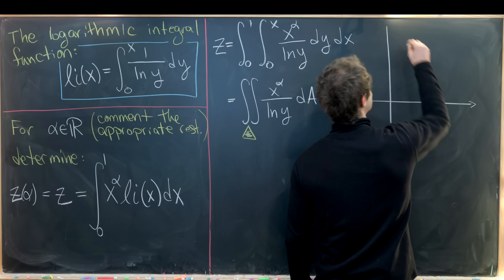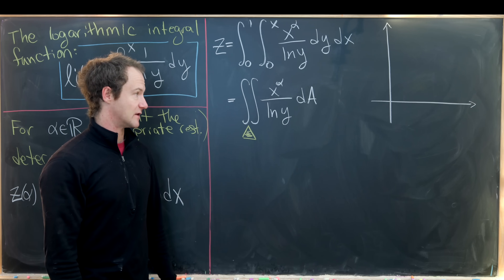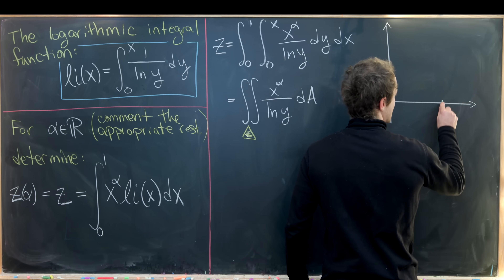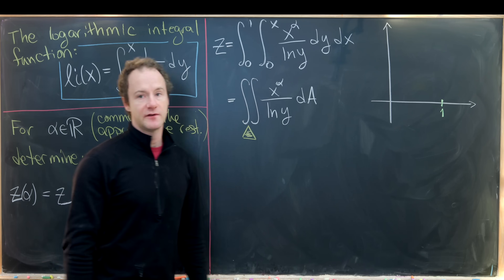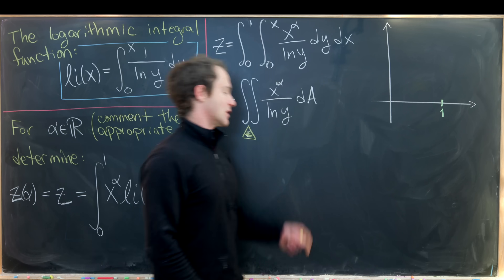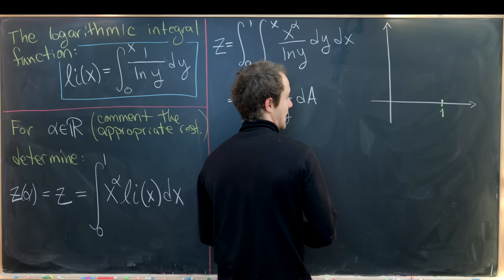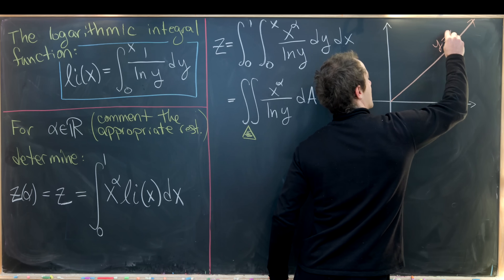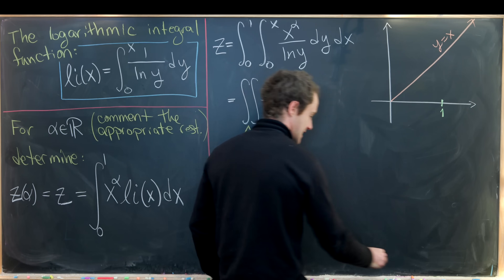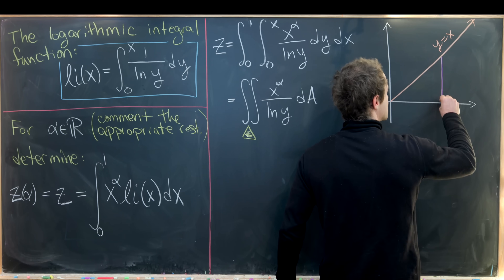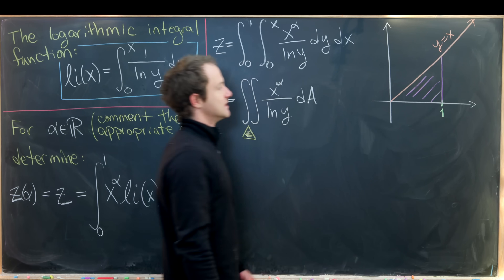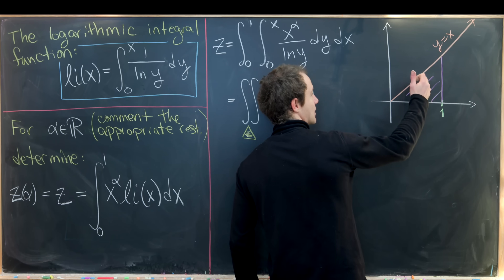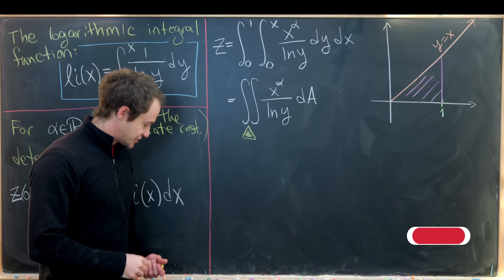Let's sketch out what the triangular region looks like. The x-values go between 0 and 1, and the y-values go between 0 and x, so the line y = x is important. Filling this in, x goes between 0 and 1, and y goes between 0 and x — giving us a triangular region below the line y = x.